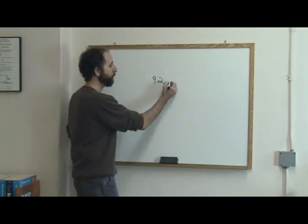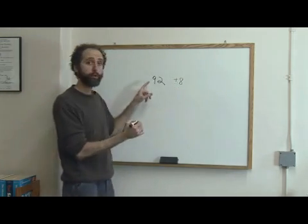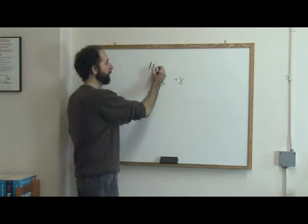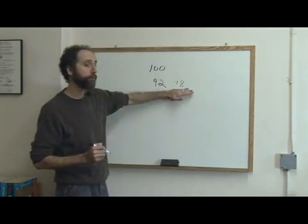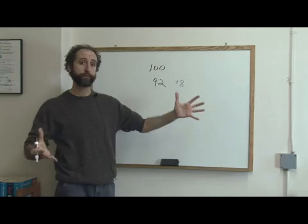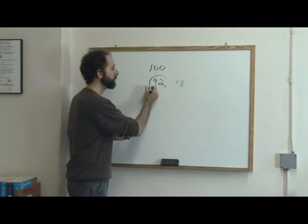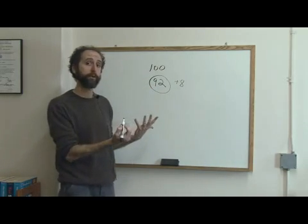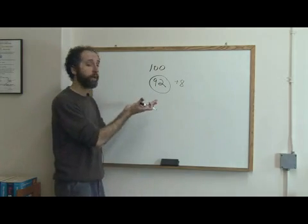So they'll add 8 points, because 92 is 8 points shy of 100, which would have been a perfect score. They'll add 8 points on to every other score. So essentially they'll take the whole span of scores and say, since the highest was 92, we're going to treat that as 100, and move everybody's grade up 8 points.